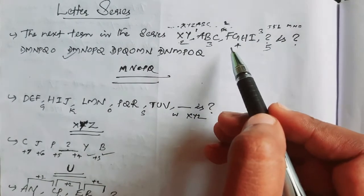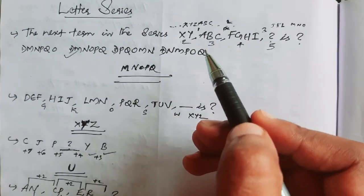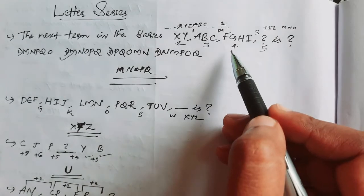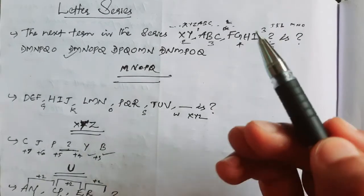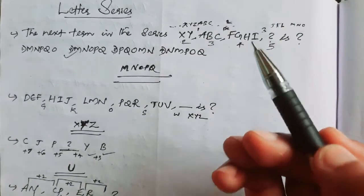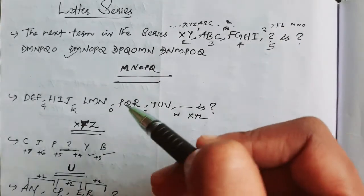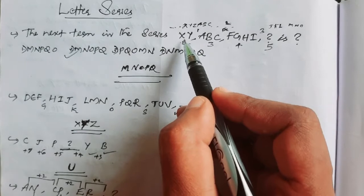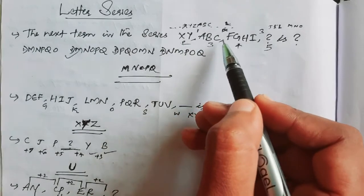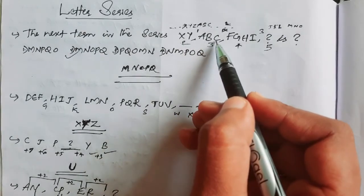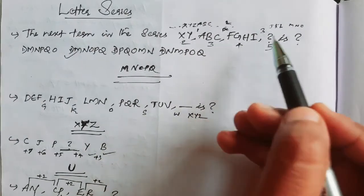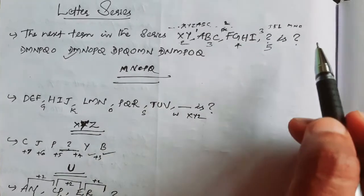If we solve and find the difference in the series, we can determine the pattern. The first term is A, B, C — which is continuous. Then FGHI is continuous, and XY is also continuous.